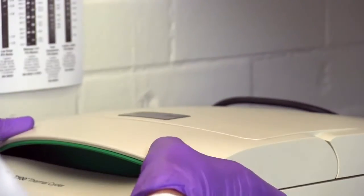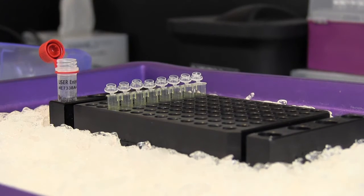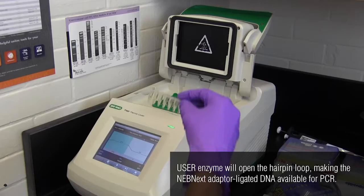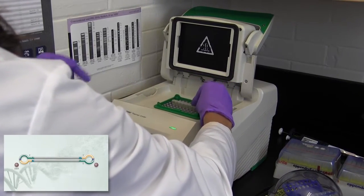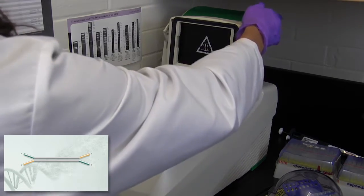Incubate at 20 degrees Celsius for 15 minutes in a thermocycler with the heated lid turned off. If you are using the NEBNext adapter, add 3 microliters of USER enzyme and mix. Incubate at 37 degrees Celsius for 15 minutes with the heated lid set to at least 47 degrees Celsius.